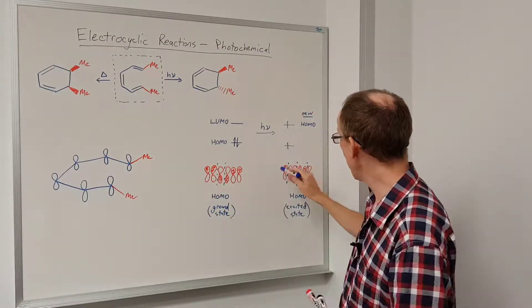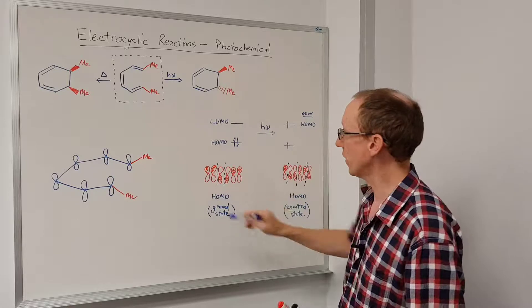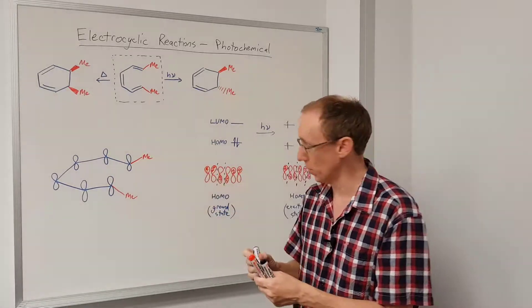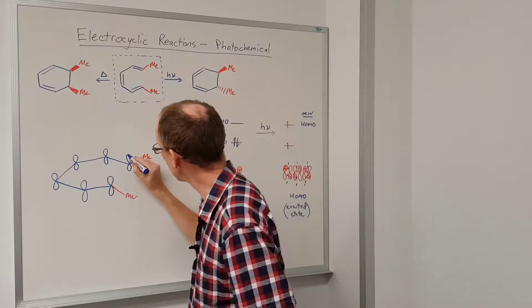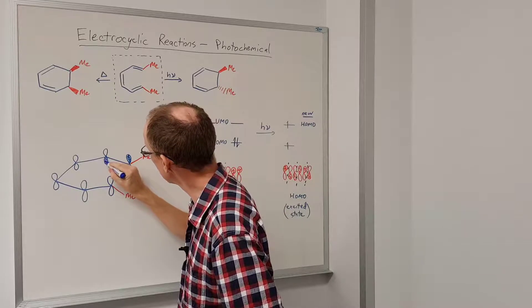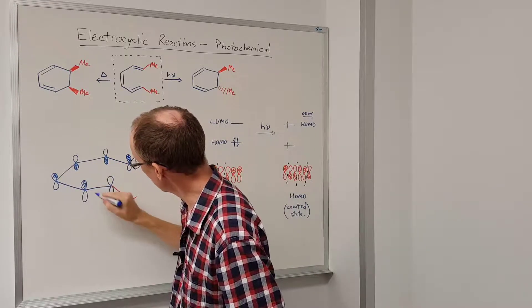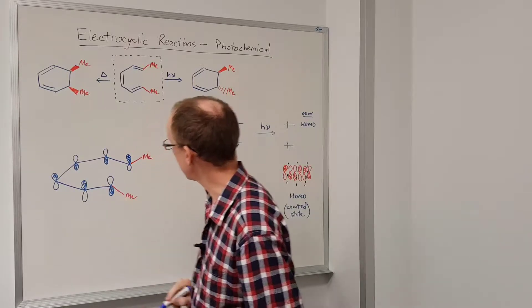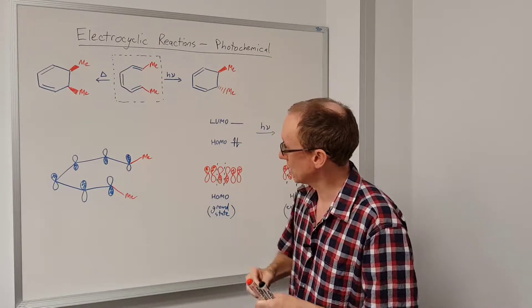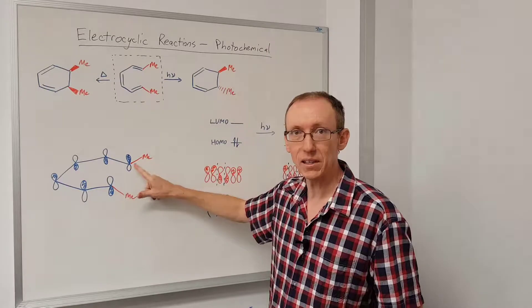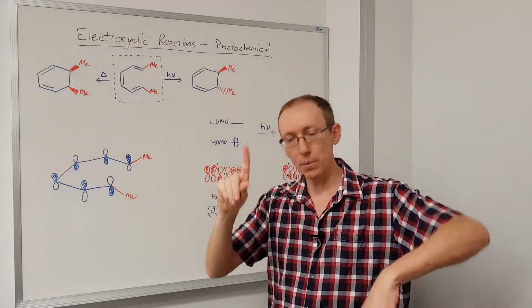So let's put that diagram onto our 3D arrangement of the molecule here. So we'll start off here, these two in phase, those two in phase with each other, like that. So now the two ends of the molecule that are coming together to make the new sigma bond are in opposite phase.